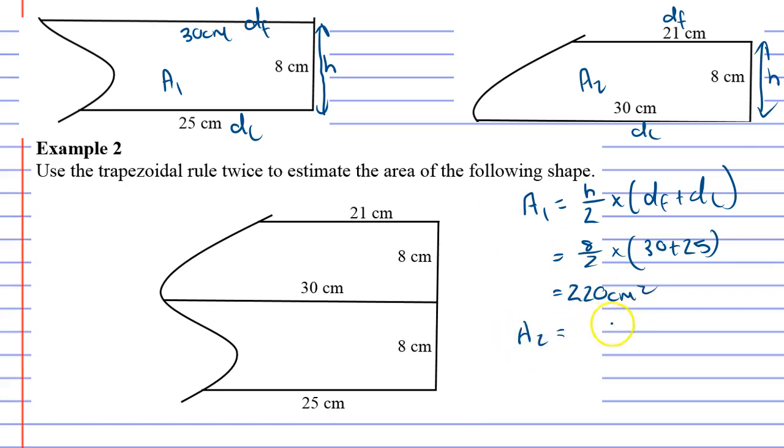Then if I look at my second shape, it's 8 over 2 again, it's height over 2, and my two sides that I'm adding are 21 and 30. All right, so when I work this one out...